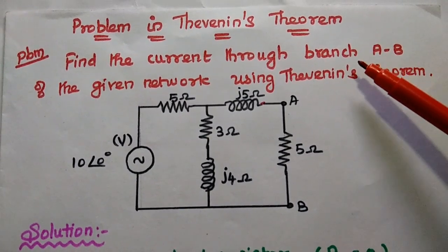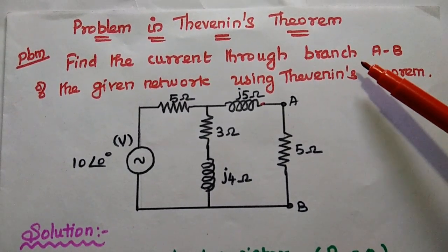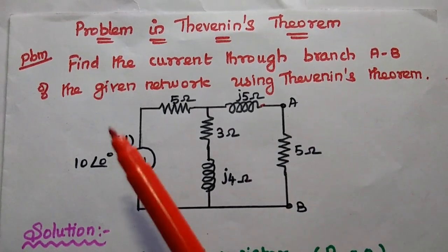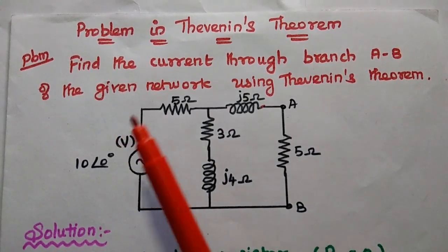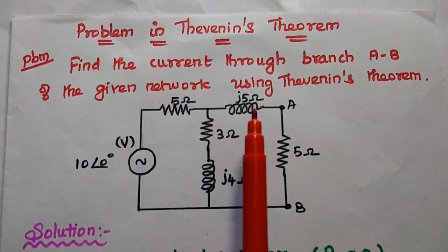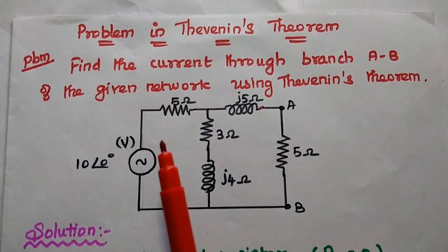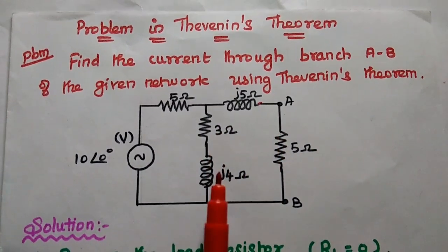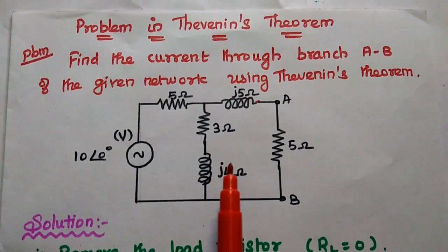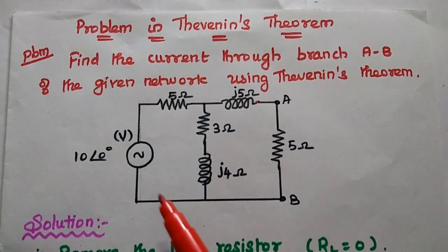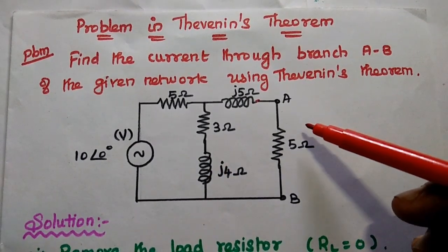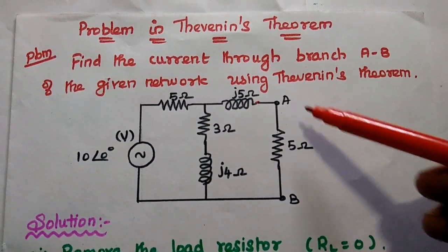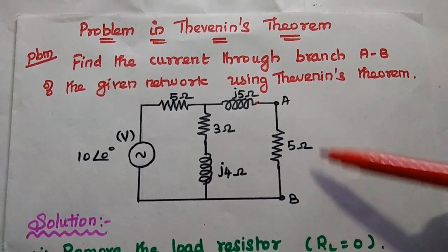Dear students, now we are going to solve one important problem in Thevenin's Theorem. The problem is to find the current through branch AB of the given network using Thevenin's Theorem. We are going to find out the load current through this 5 Ohm resistance across the AB terminals.